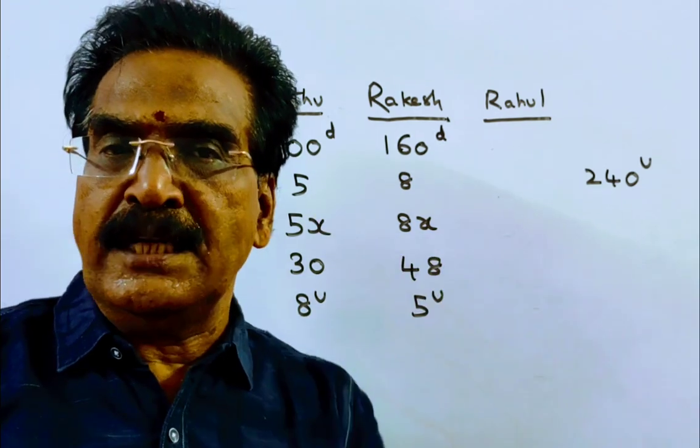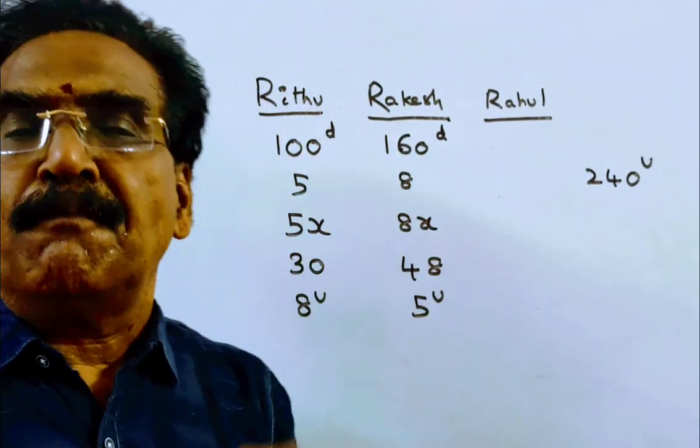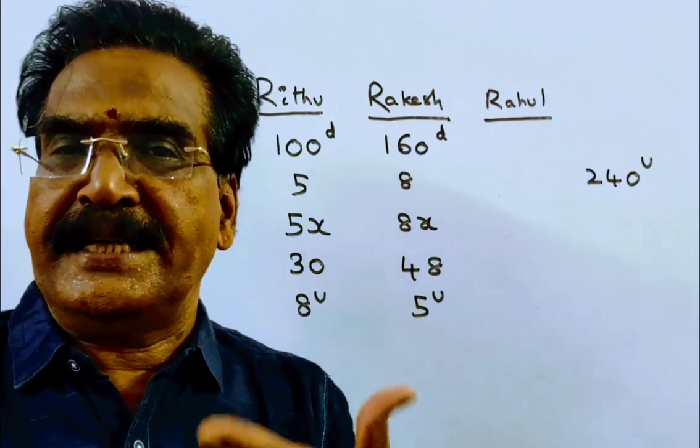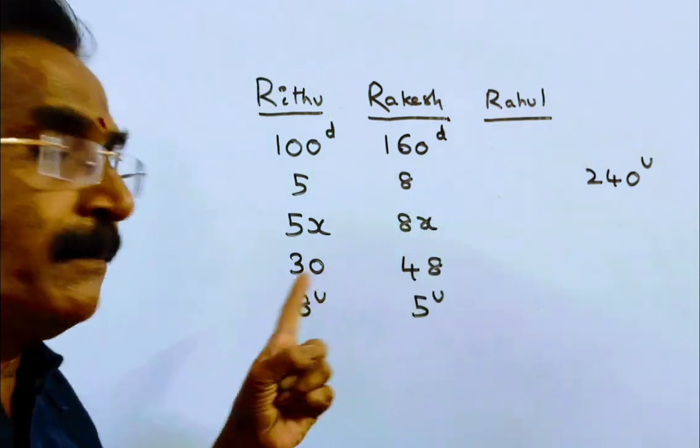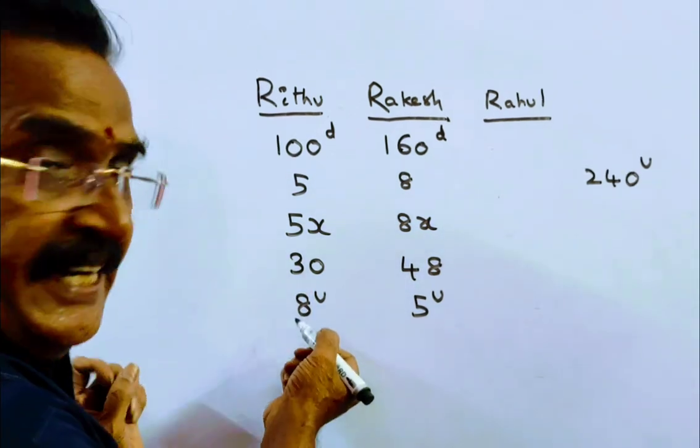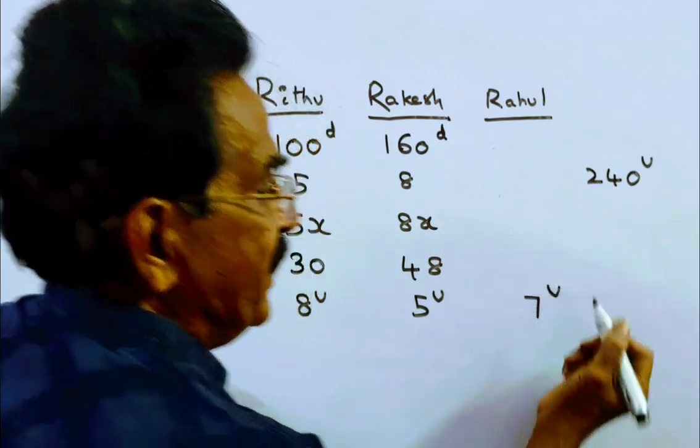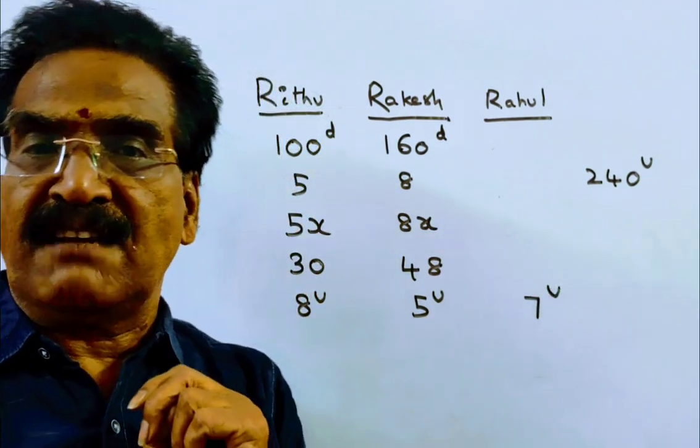Friends, coming to Rahul. Rahul is 12.5% less than Ritu. Hence, 12.5% means 1 by 8. So, Rahul can do 1 by 8 less than Ritu. 1 by 8 of 8 is 1. So, 8 minus 1, 7. Friends, Rahul can do 7 units of work per day.